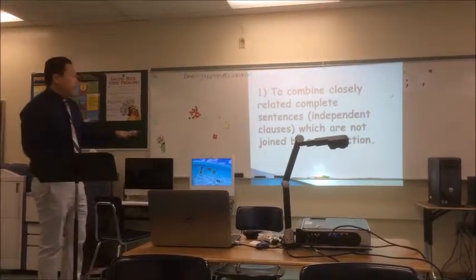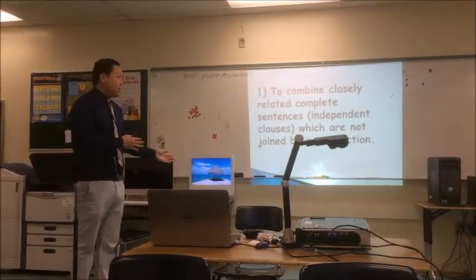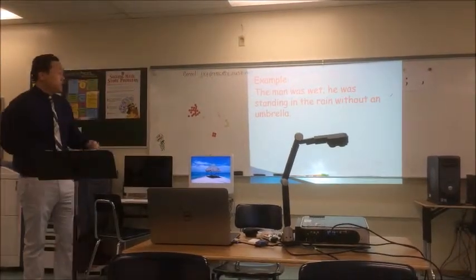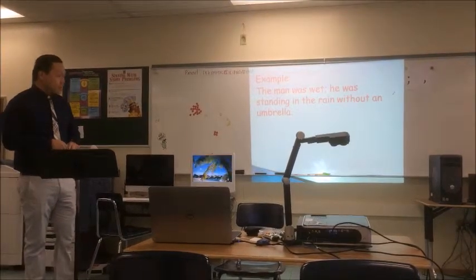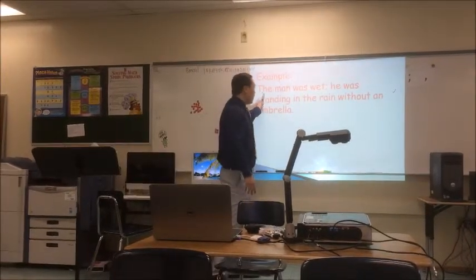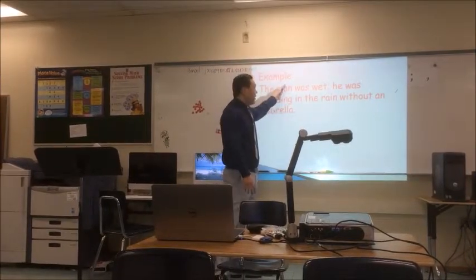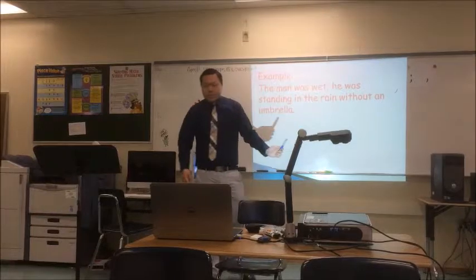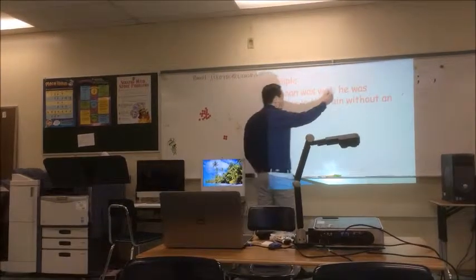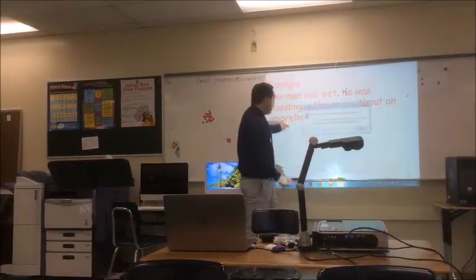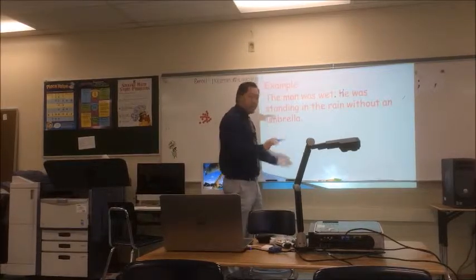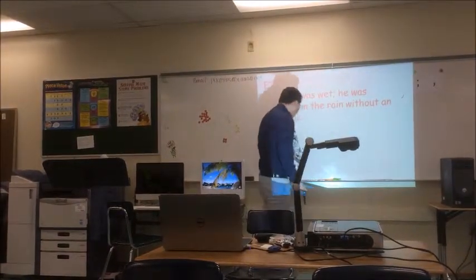The first function: to combine closely related complete sentences — independent clauses — which are not joined by a conjunction. Example: 'The man was wet. He was standing in the rain without an umbrella.' You don't need a conjunction for each to stand alone, but because they relate to each other, you put a semicolon instead of a period. In most situations it would be a period with a capital H, but because these two sentences relate on some level, you use a semicolon.